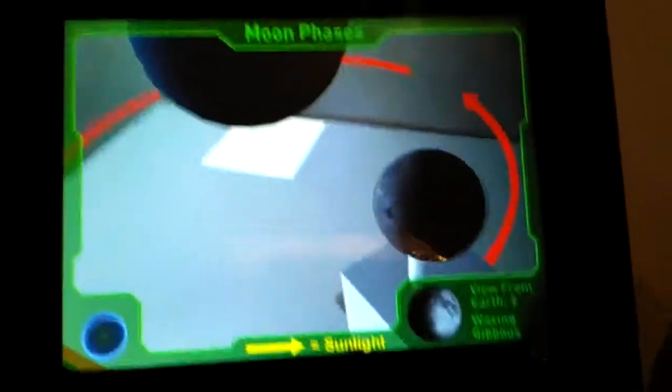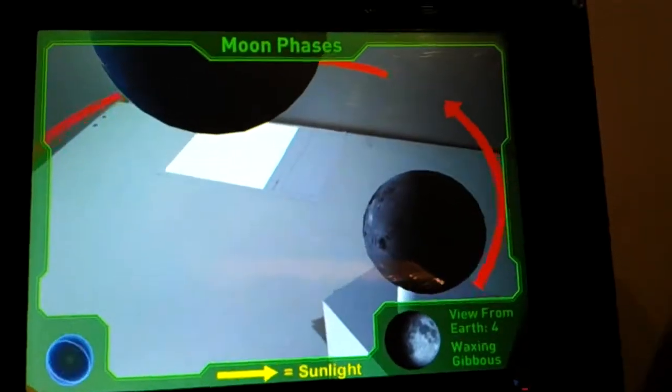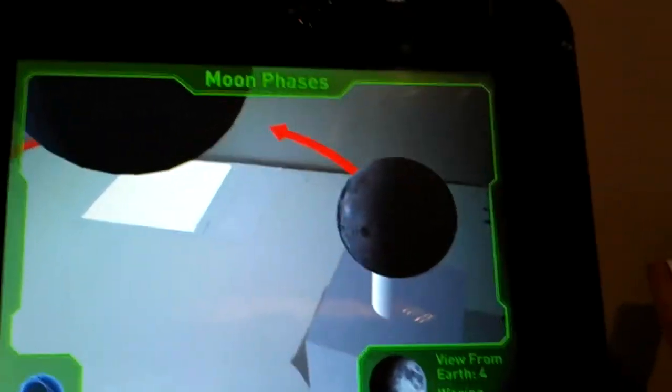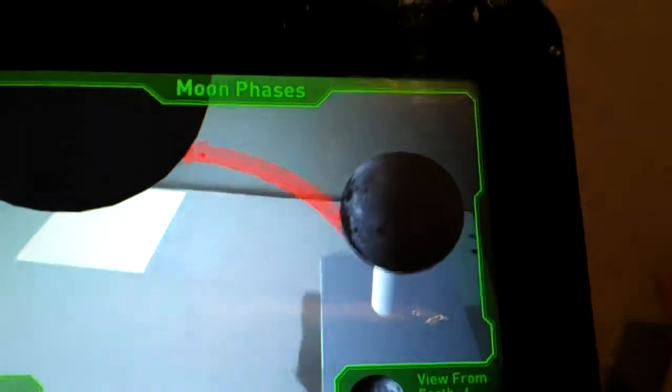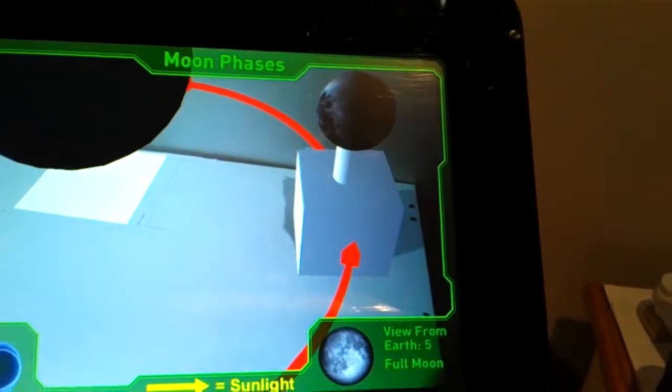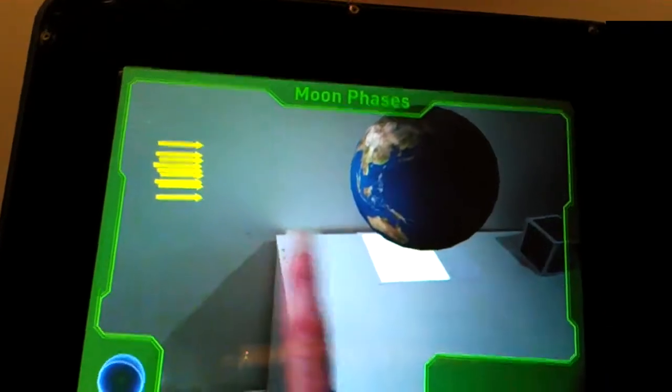As you move the Moon around the Earth, you can see in the bottom right hand corner how the Moon is changing through different phases. We're going from the waning gibbous phase into the full Moon phase. This is all relative to sunlight that you can see with the sun rays coming in from the left hand side.